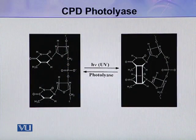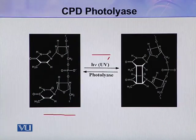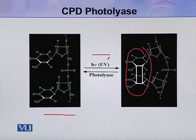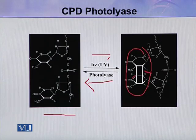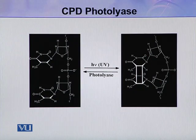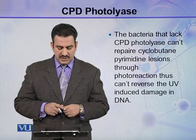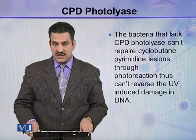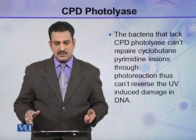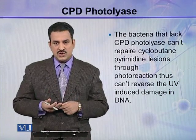Here you can see in this picture: this is normal DNA. When this is exposed to UV light, a dimer is formed — here you can see this is a dimer. And when in the presence of photolyase — CPD photolyase enzyme — these bonds are broken and normal DNA is restored. This is the action of photolyase. Bacteria that lack CPD photolyase cannot repair cyclobutane pyrimidine dimers through photoreactivation, and thus cannot reverse the UV-induced damage in DNA, because it is CPD photolyase which reverses the damage.